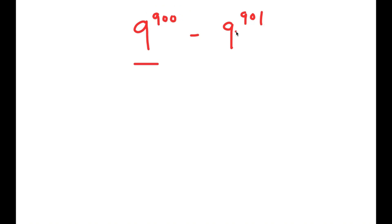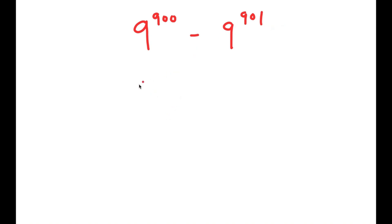The easiest way to solve this is to simplify as much as we can, and a way to do that is to factor out a term. 9 to the power of 900 is actually a factor of 9 to the power of 901, so all we have to do is rewrite 9 to the power of 901 as something times 9 to the power of 900. We can use properties of exponents to do this.